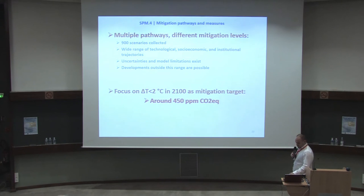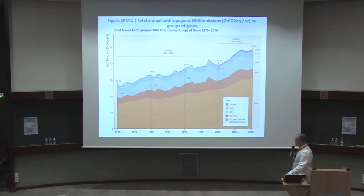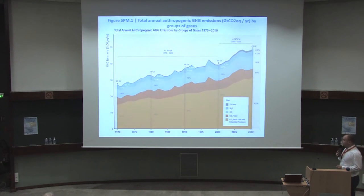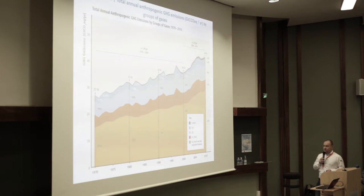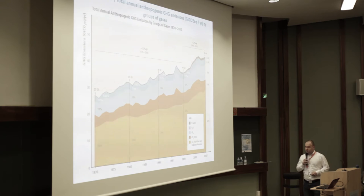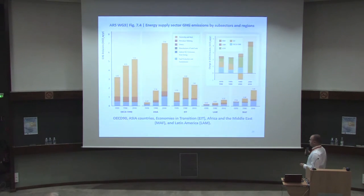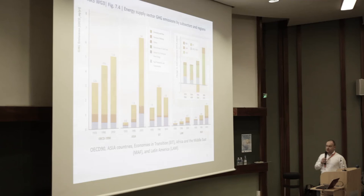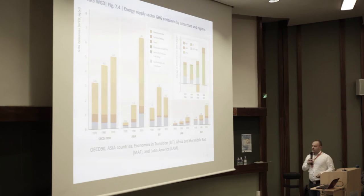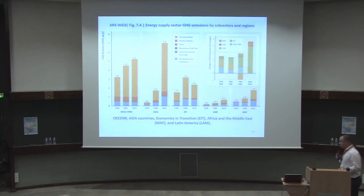The majority of the increase — as well as the absolute value — of CO2-equivalent emissions comes from fossil fuel usage and industrial processes. Here we see different regions in 1970, 1990, and 2010. The world is growing — we are 7.5 billion people and will be 9.5 billion by 2050. There are a lot of people wanting to improve their lives, and they are doing that — most notably in Asia.